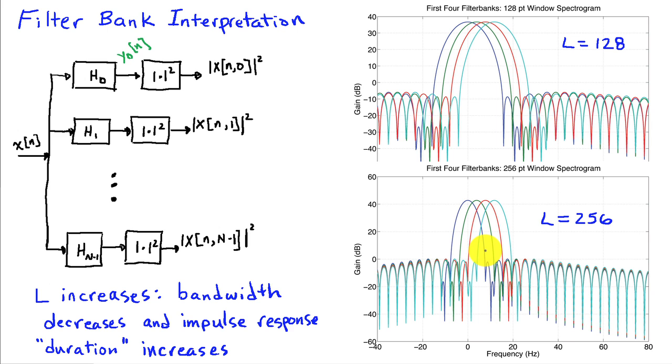The time resolution interpreted in terms of this filter bank has to do with the duration of the impulse response, because it's going to be difficult to see transitions in x of n that are significantly shorter than the effective duration of the impulse response. So as L increases, we have narrower bandwidth. What happens in the time domain is the impulse response duration increases, and consequently we get reduced temporal resolution.